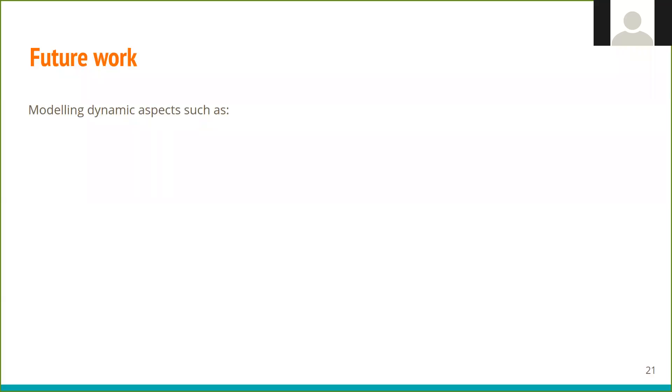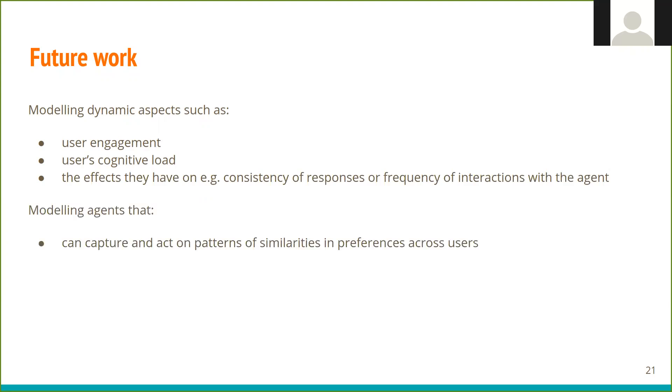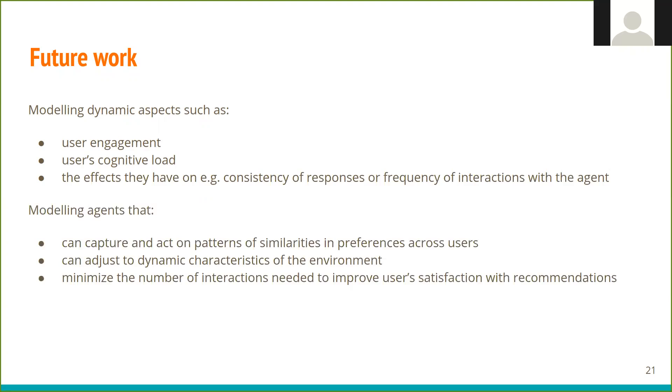As future work, we consider modeling dynamic aspects such as user engagement, the user's cognitive load, and the effects they have on consistency of responses or frequency of interactions with the agent. Also, we consider modeling agents that can capture and act on patterns of similarities in preferences across users, can adjust to dynamic characteristics of the environment, minimize the number of interactions needed to improve user satisfaction with recommendations, and can learn in a privacy-preserving manner.